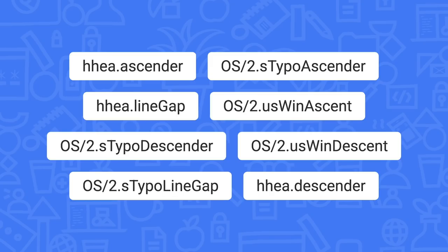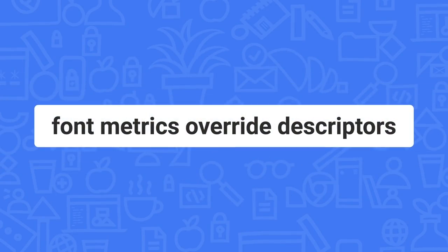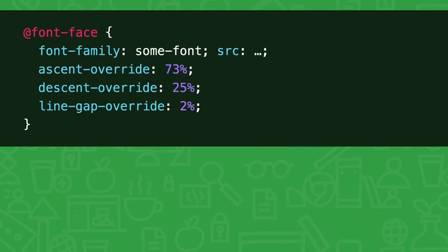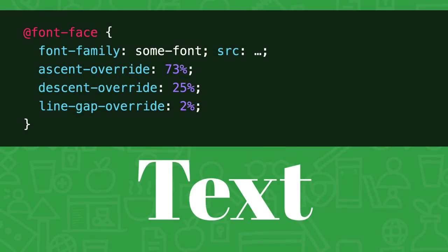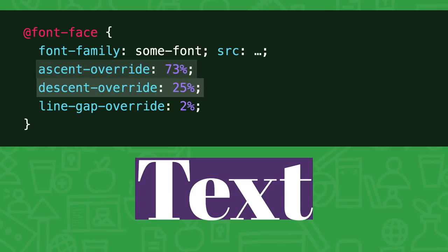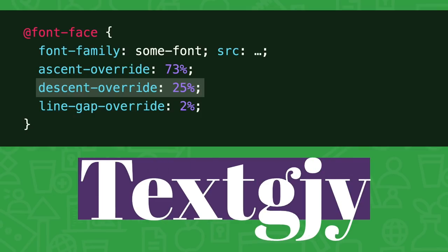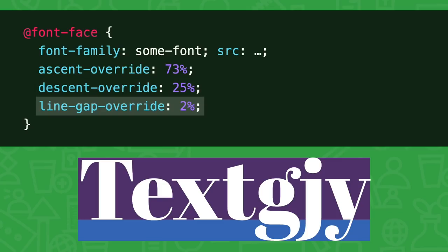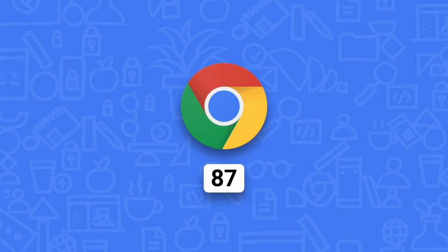A new CSS feature tells the browser to ignore all of that in favor of the font metric overrides — or can we just call them fmods? This is supposed to be a short video. Here are the fmods. For text at a given font size, I can say 73% is the ascenders, 25% is the descenders, and 2% is shared between the gaps at the top and bottom. This will be fully consistent in all browsers that support fmods, which is currently Chrome 87.